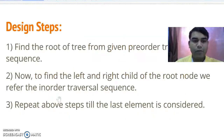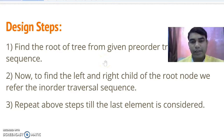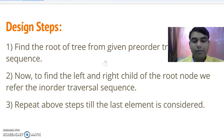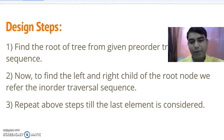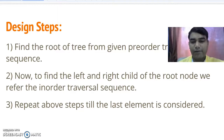In Step 1, first of all we need to find the root node of the tree. How do you find the root node? From the given pre-order sequence we can find the root node, because in pre-order sequence the root is always at the beginning. After getting the root node, we can find the left child and right child from the given in-order traversal sequence.